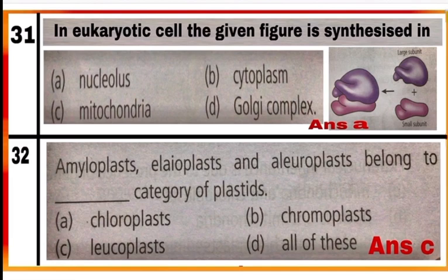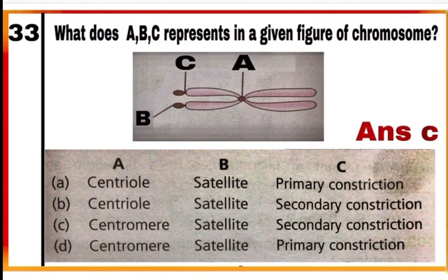Question 32: Amyloplasts, elaioplasts, and aleuroplasts belong to which category of plastids? Option C — leucoplasts. They are colorless plastids: amyloplasts store starch, elaioplasts store lipids, and aleuroplasts are protein-storing leucoplasts.